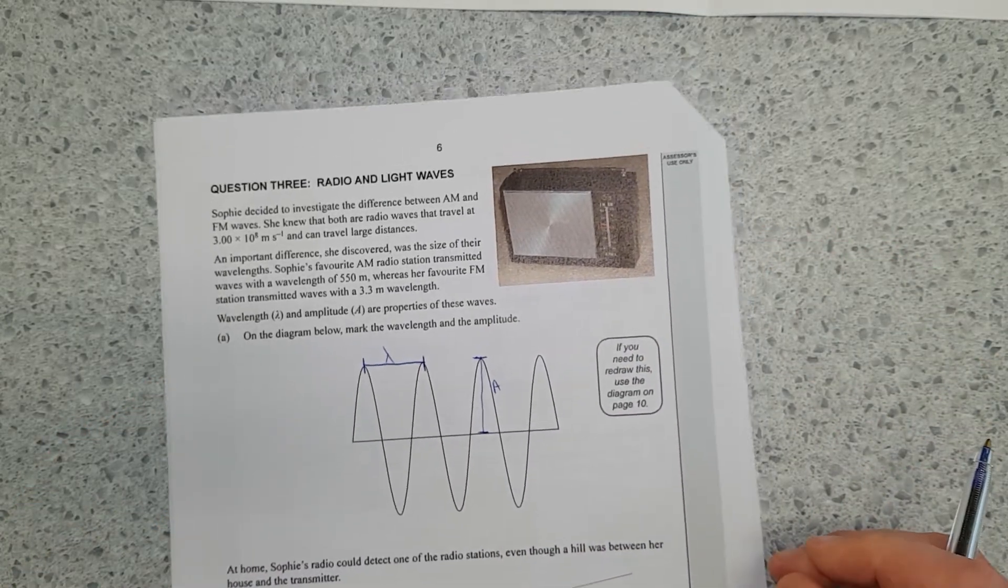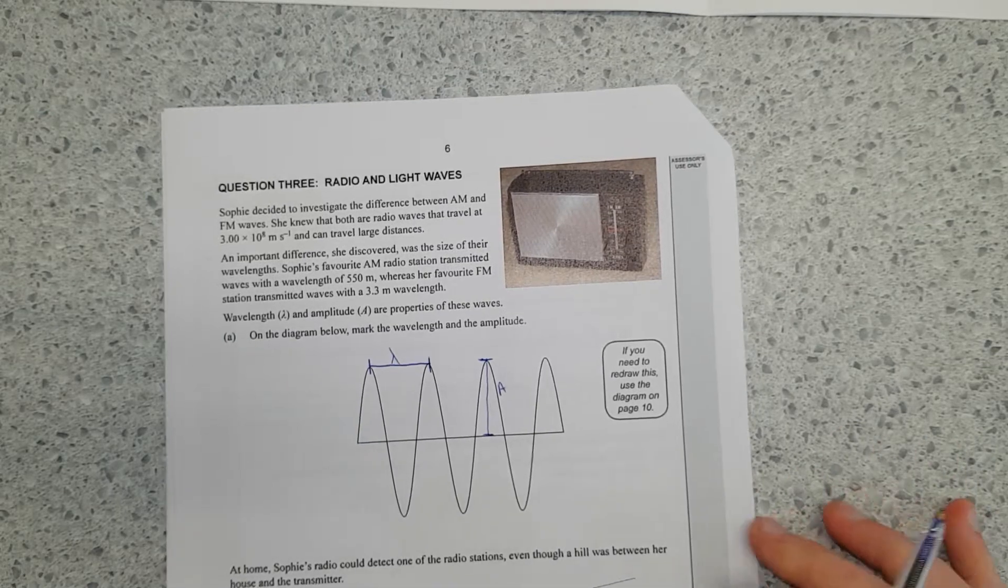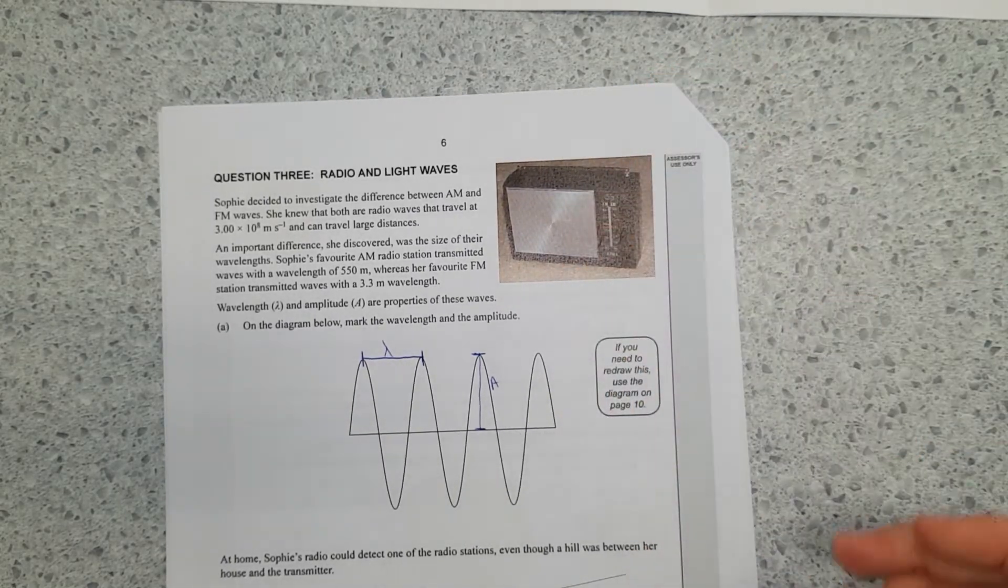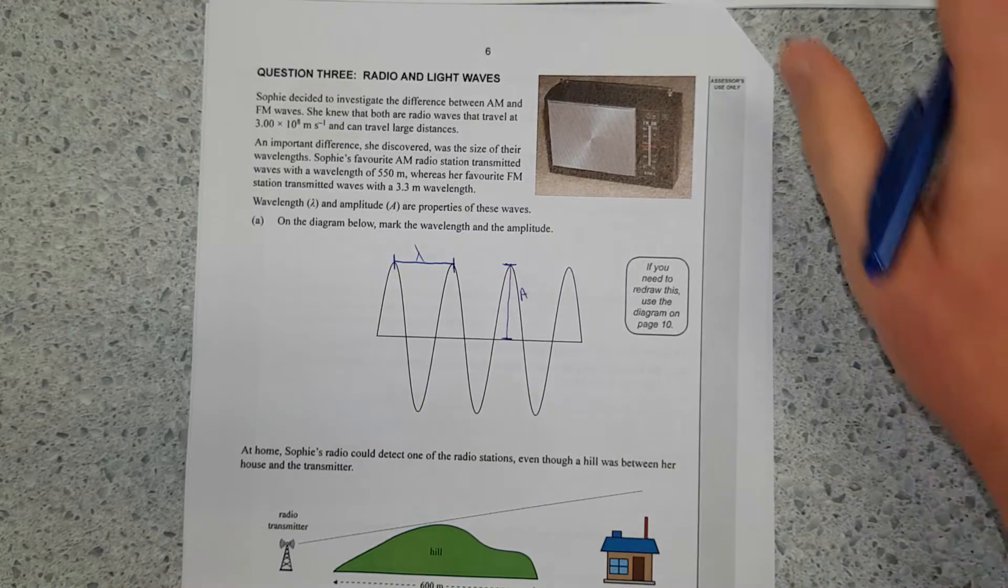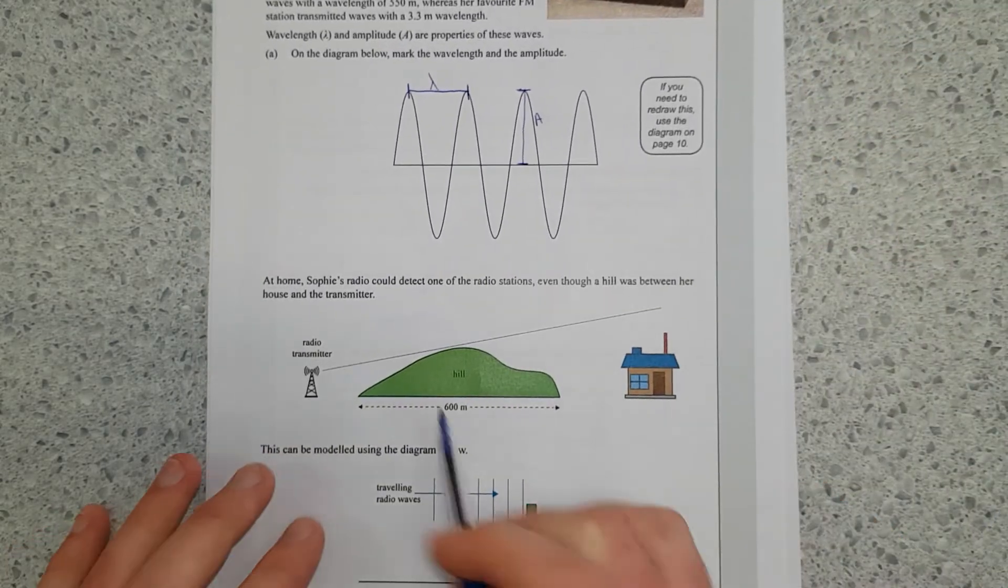Also, Sophie must be from the 1950s, because what teenager I have never met listens to AM radio. It's usually old people that listen to that.